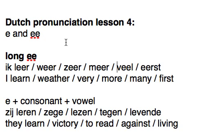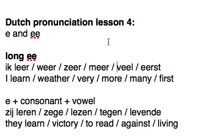We're going to see a few examples and do a few exercises. If you see a double E — so EE — you will always pronounce it as E. For example, you can see the translation here under the double E.